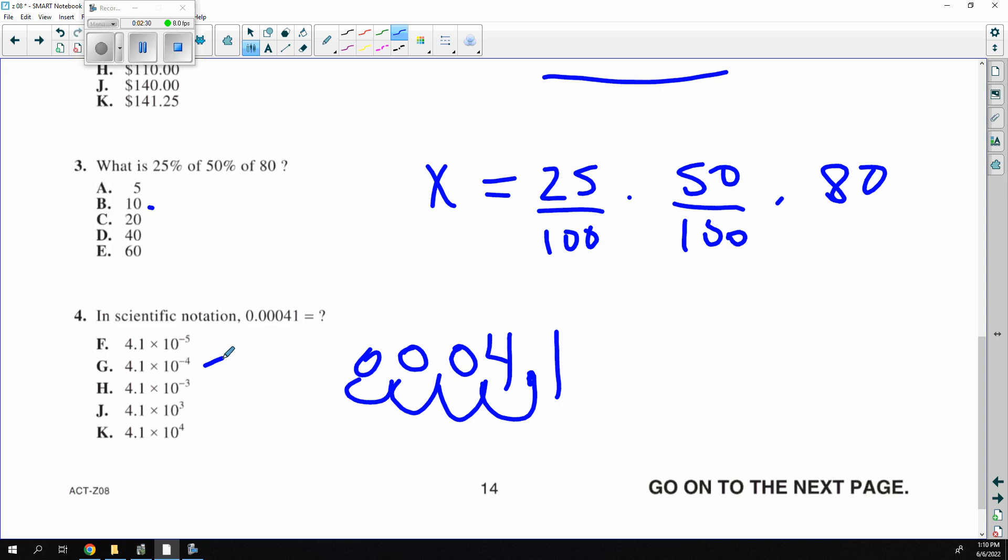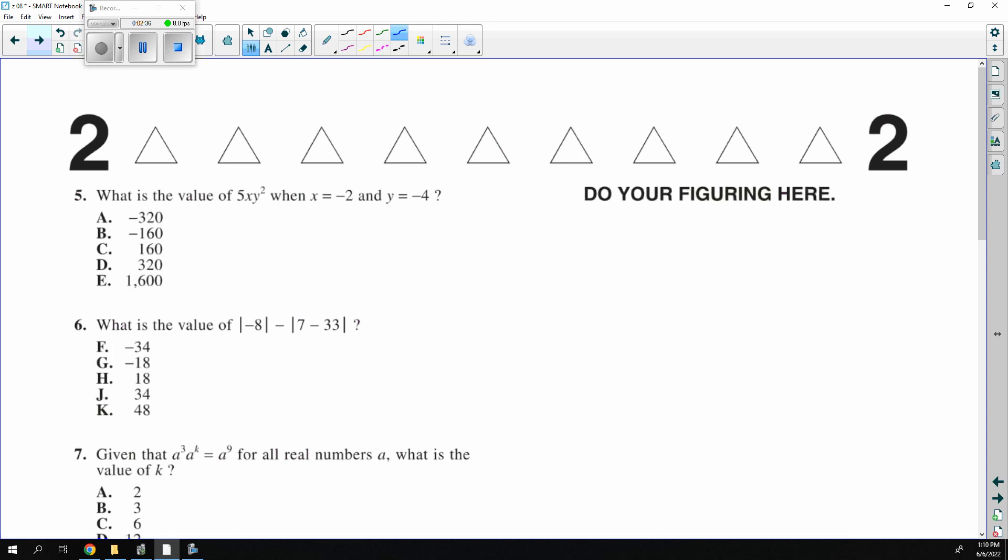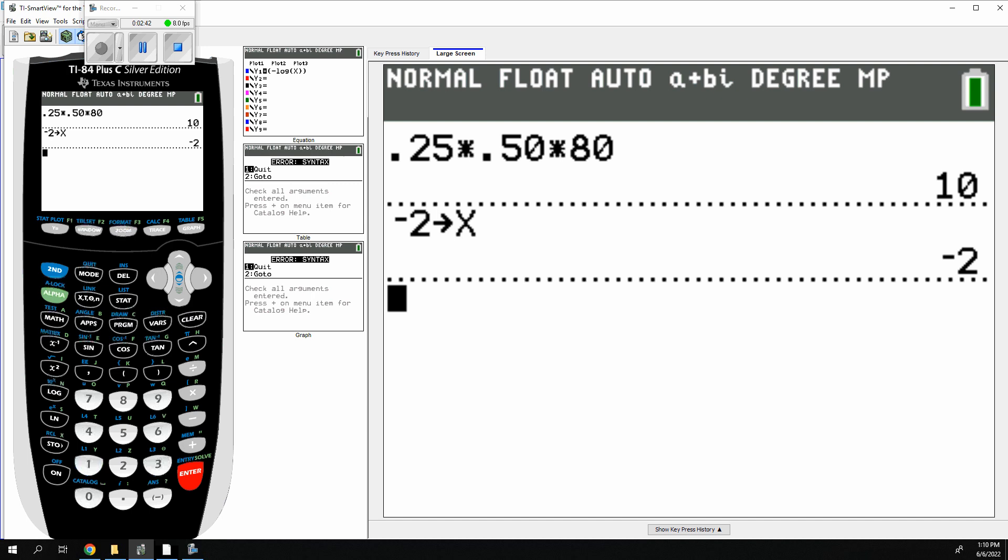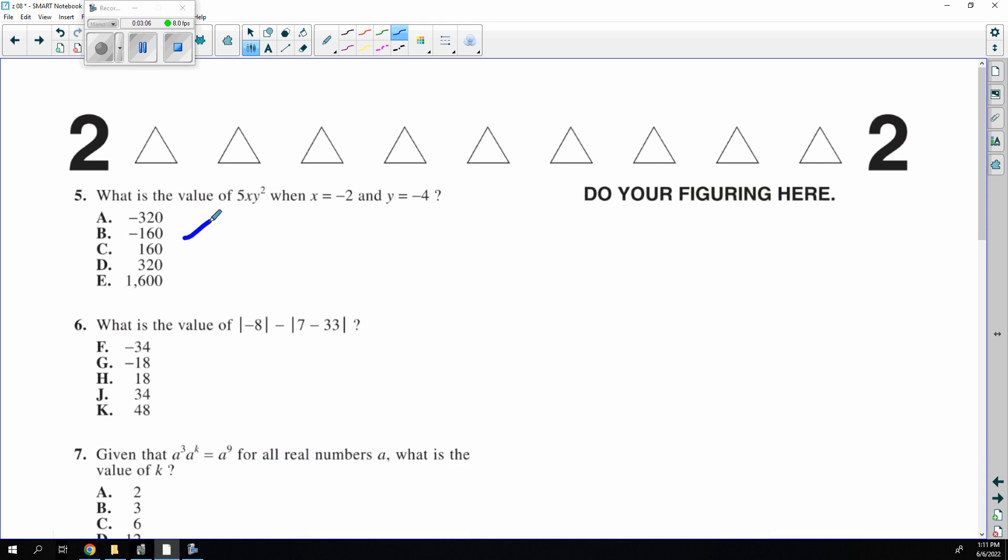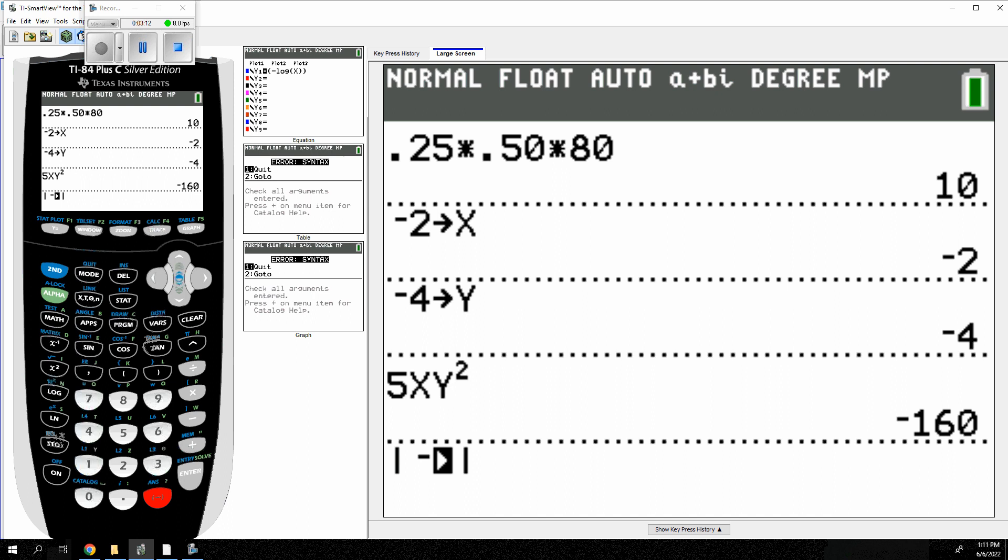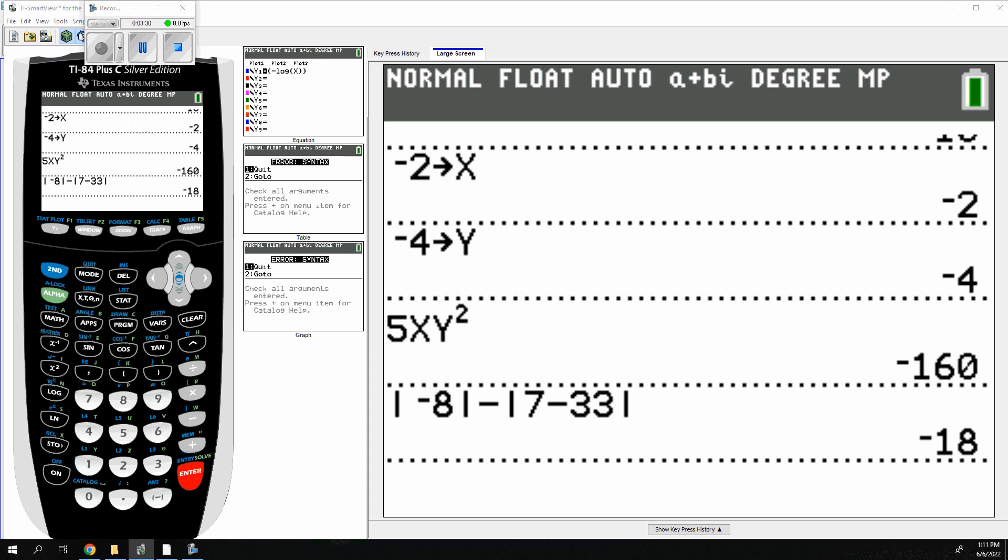A stow. Negative 2 is my X. So I would go negative 2 stow X. And negative 4 is my Y. Remember you have to do alpha. And then I could just type it in 5XY squared. Yes, you could have done that by hand. I like cheating on it and doing the calculator to get minus 160 just like my abs. So abs, math number abs. I think it was negative 8 minus, get it out, minus a new abs. And it was negative 6. And it was 7 minus 33 for an answer of negative 18.